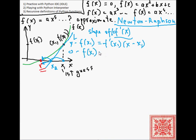y minus f of x1 equals the derivative of f at x1 times x minus x1. So, at x2, y is 0. So that becomes 0 minus f of x1 equals the derivative of f at x1, x minus x1.